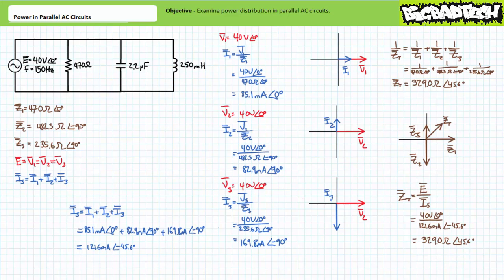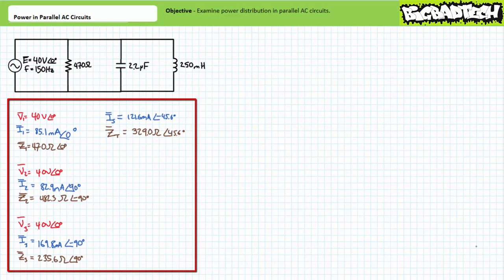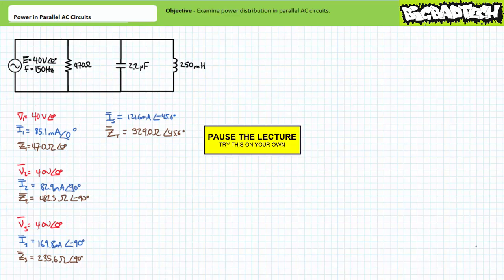We can now move on to stage two of this example problem. Given these voltage and current figures, see if you can calculate the apparent, real, and reactive power for each individual element and the total parallel circuit. Again, power calculations necessitate the use of a relative phase shift between voltage and current. Luckily, voltage across elements in parallel is the same and we're employing source voltage as our reference, so we don't have to worry about conversion between absolute and relative phase shift. By all means, pause the lecture and try this on your own.